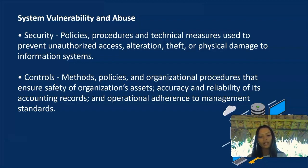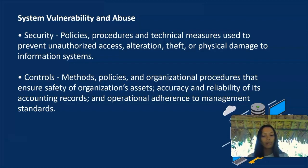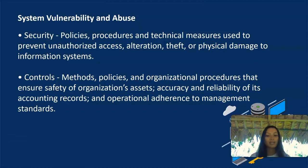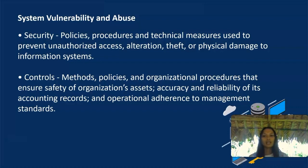Information systems concentrate data in computer files that can potentially be accessed by large numbers of people and by groups outside the organization. When large amounts of data are stored in electronic form, they are vulnerable to many more kinds of threats than when they exist in manual form. Through communications networks, information systems in different locations can be interconnected, and the potential for unauthorized access, abuse, or fraud is not limited to a single location but can occur at any access point in the network.